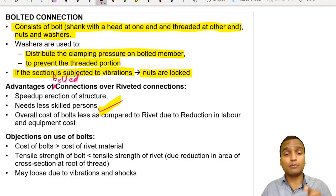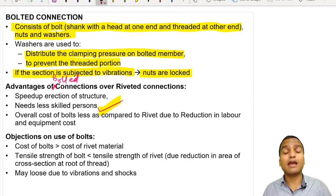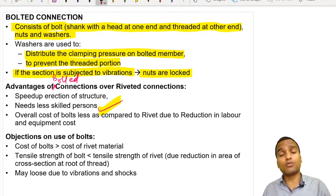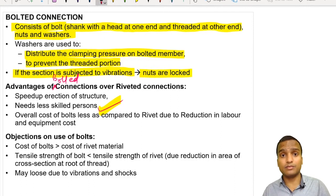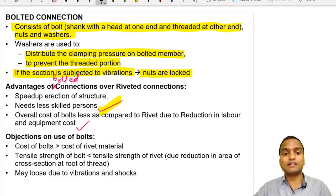Although bolts are costlier than rivets, the overall cost of bolted connections is less compared to riveted connections. This is because there is a reduction in the cost of labor and equipment. For riveted connections, we require heating for hot riveting, rivet guns and skilled laborers for cold riveting, and hammering as well. So overall cost decreases.